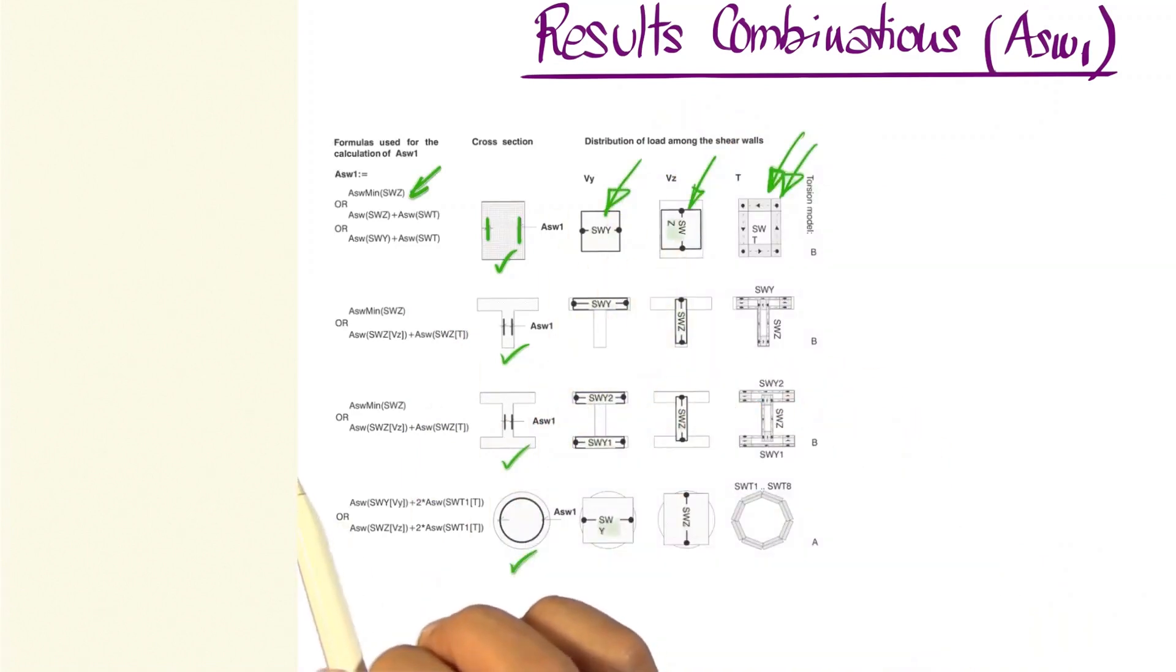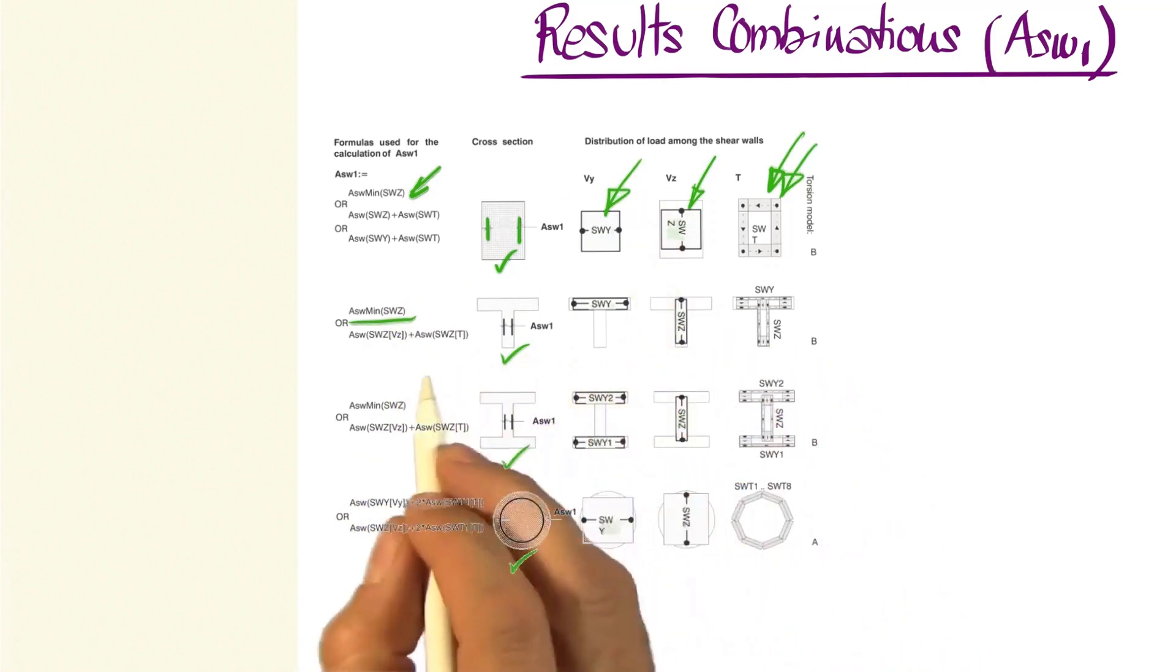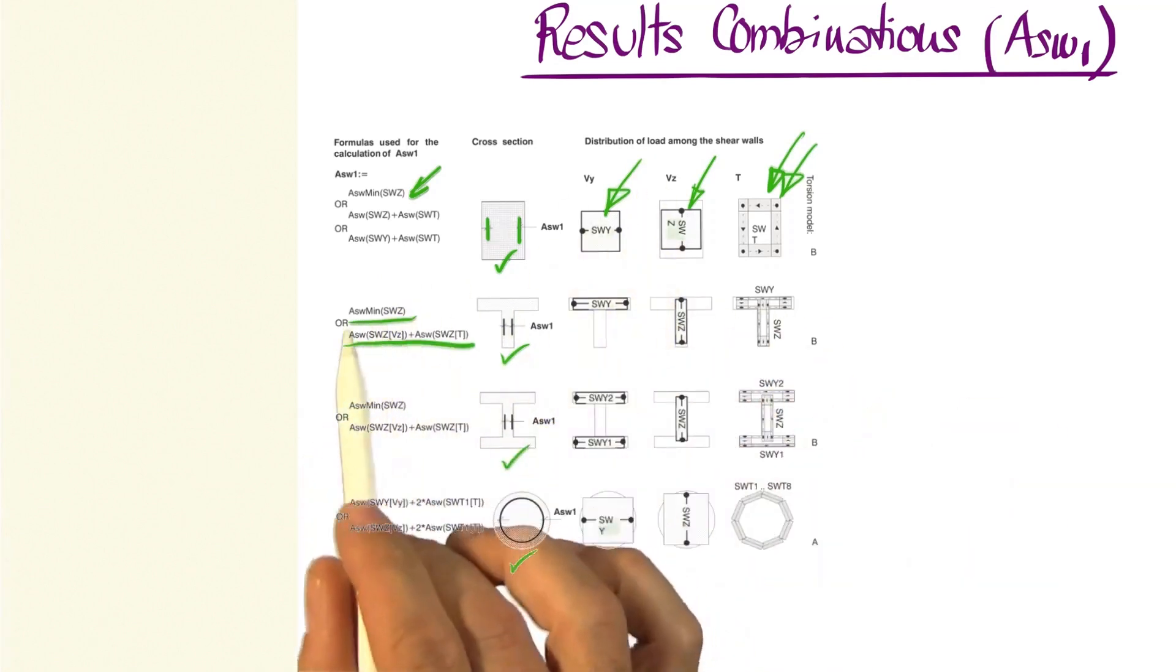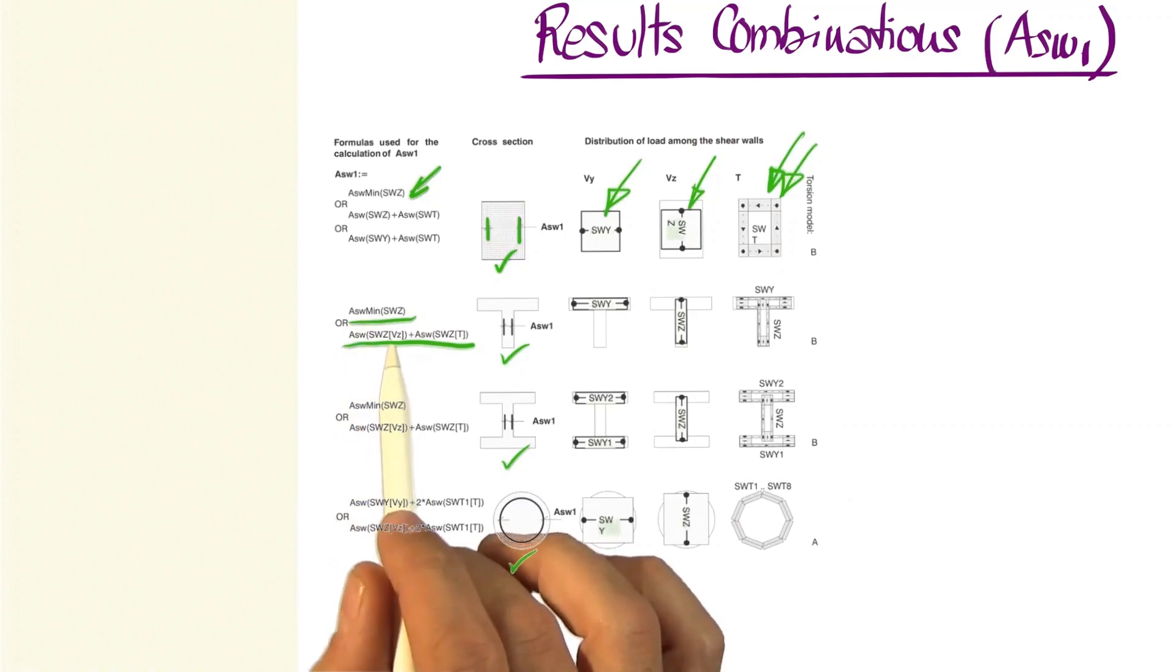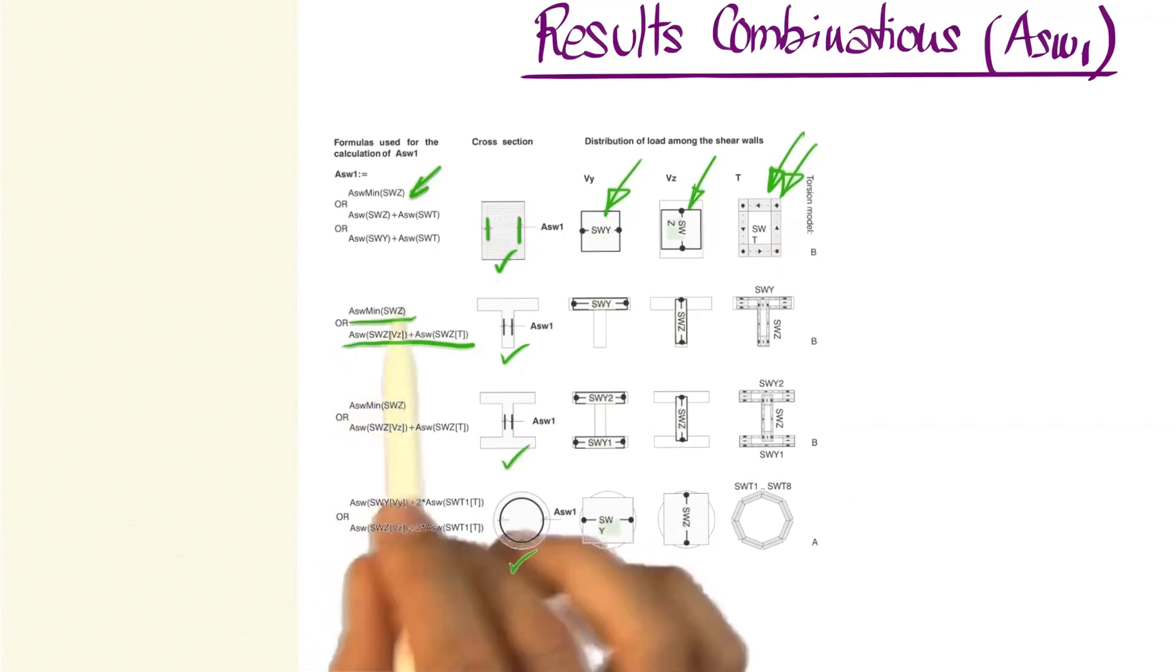Similarly, how can we obtain the reinforcement necessary in this vertical element? This would be the minimum steel reinforcement ratio, the necessary steel reinforcement ratio, or that which the program proposes for the shear wall in Z corresponding to our force VZ,